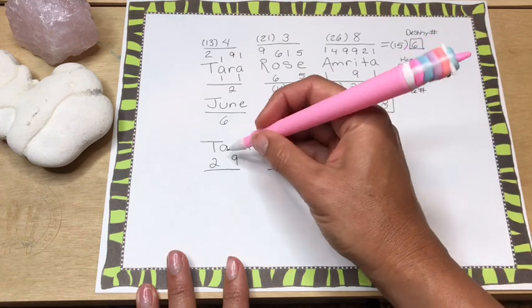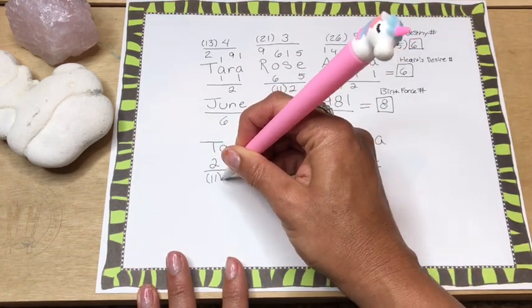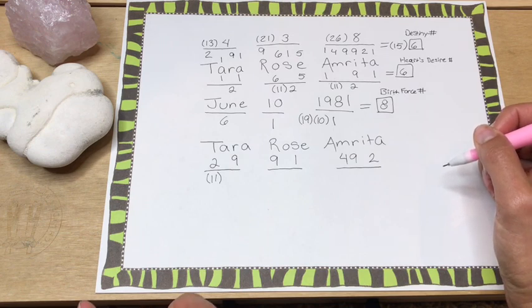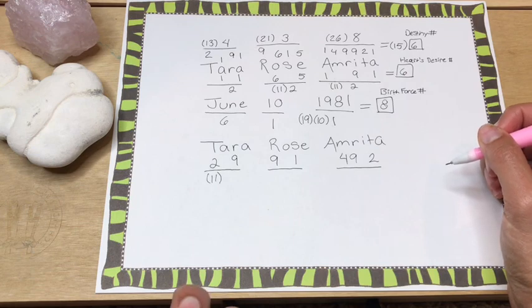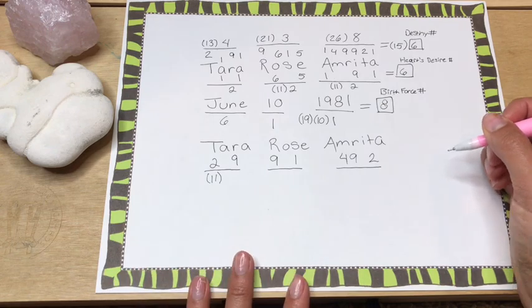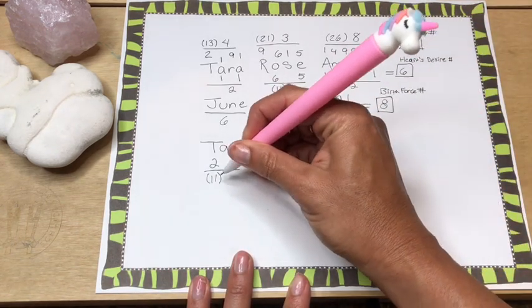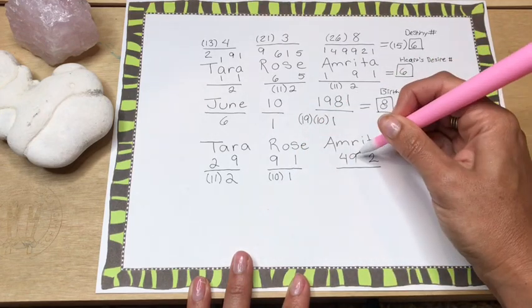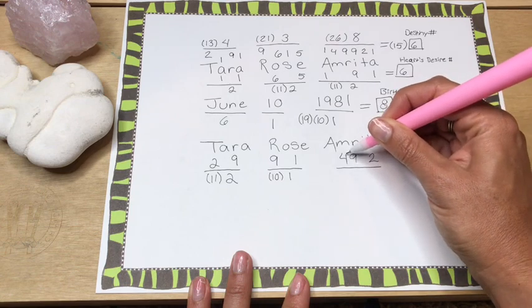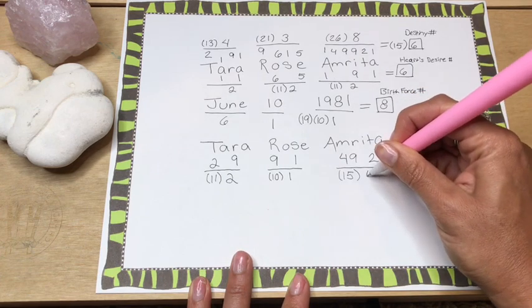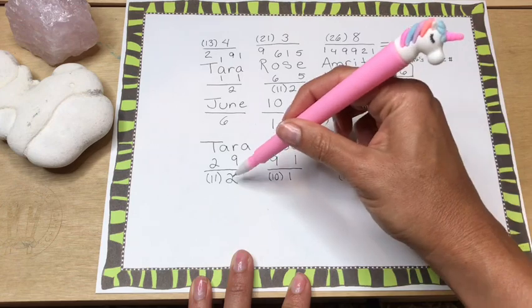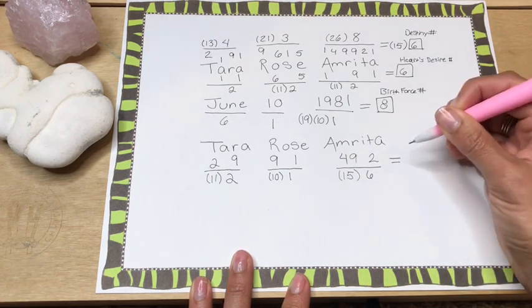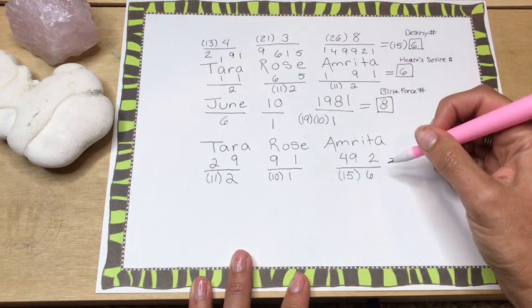So we are now going to add these numbers together. So 9 and 2 is 11. And remember, that's one of those special numbers. If you are interested in what are those special numbers, go ahead and go back to part one. So the special numbers were 11, 22, 16, and 19. They just tend to carry a little extra something something to the number. But of course, we still have to break this down into a single digit. So 1 plus 1 is 2. 9 plus 1 is 10. 1 plus 0 is 1. We have 4 plus 9 plus 2, which is 15. 1 plus 5 is 6.